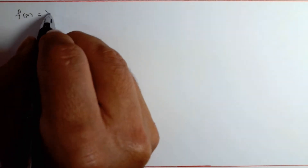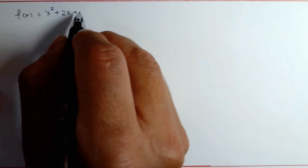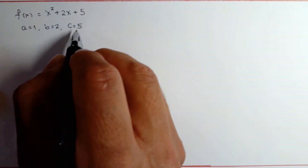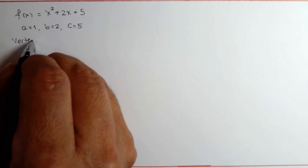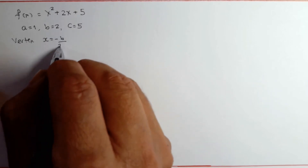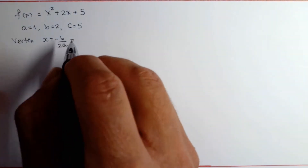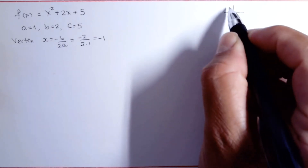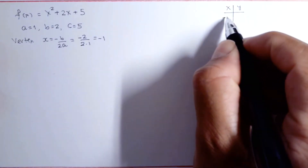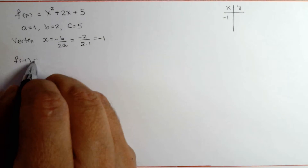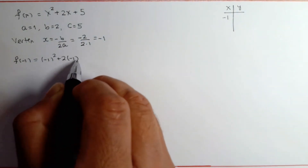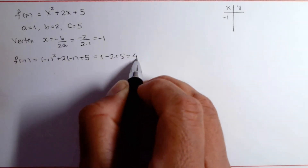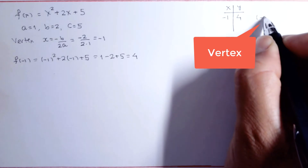Let us graph this quadratic function. Since we have the function in general form, we identify a, b, and c. The first entry of the vertex is the number negative b over 2 times a. We compute the second entry of the vertex by evaluating the function at the first entry of the vertex. This is the vertex.